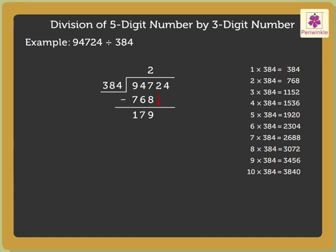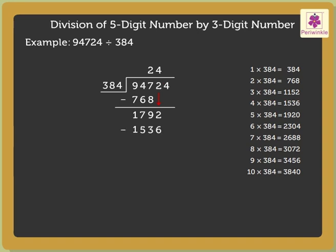Now, bring down the next digit, that is 2. Here, as 1792 is greater than 384, we find the nearest multiple to 1792, which is 1536. As 384 into 4 is equal to 1536, we write 4 in the quotient above the 2. Next, subtract 1536 from 1792, which is equal to 256. Now, bring down the next digit, that is 4.